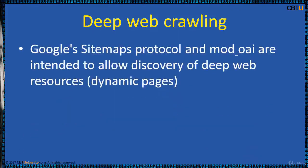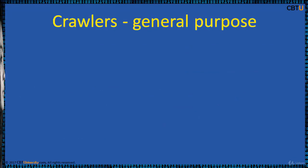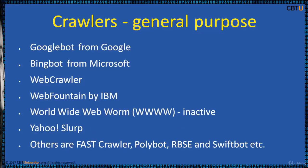Deep web crawling: Google Sitemaps protocol and Mod_OAI are intended to allow the discovery of deep web resources, that is, dynamic pages. Googlebot web crawling is done on all the text contained inside hypertext content, tags, and href links. Googlebot from Google is a search bot software used by Google which collects documents from the web to build a searchable index for the Google search engine.